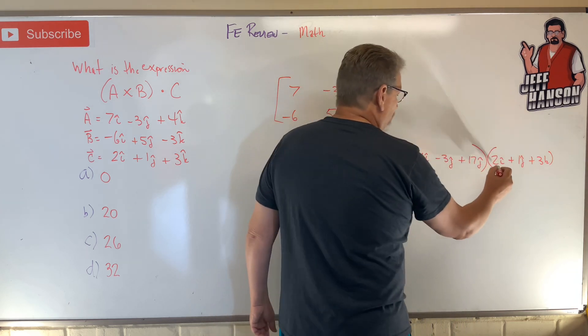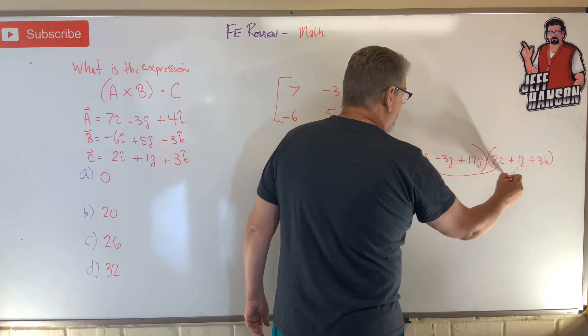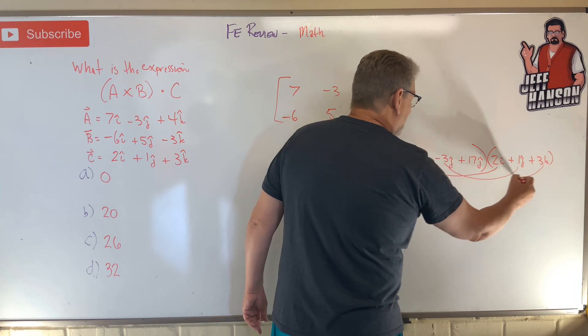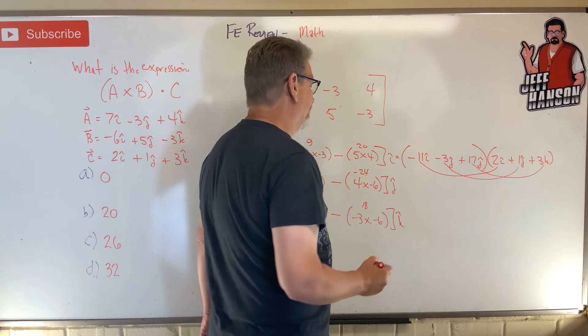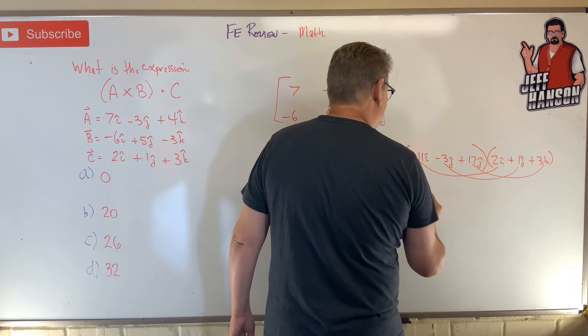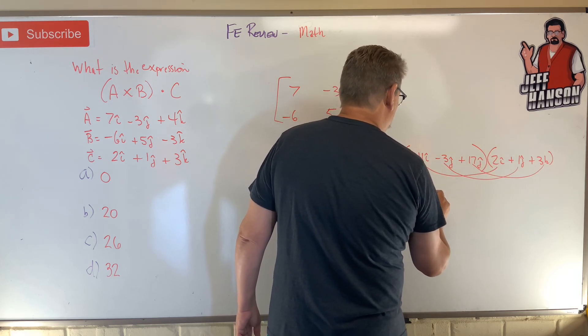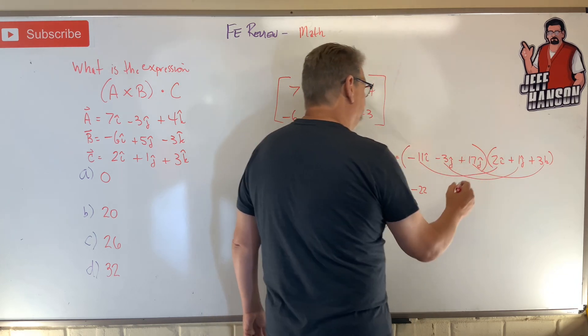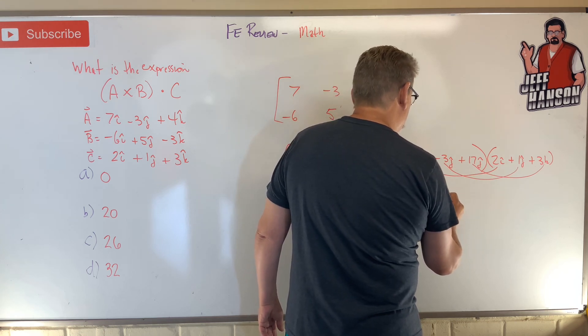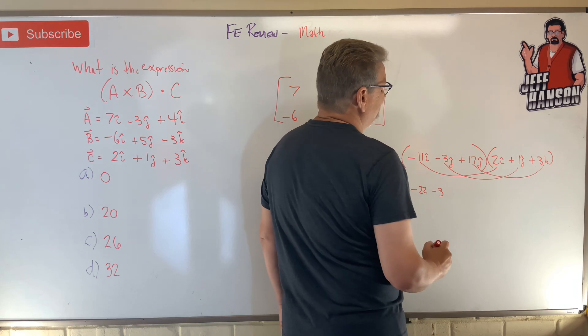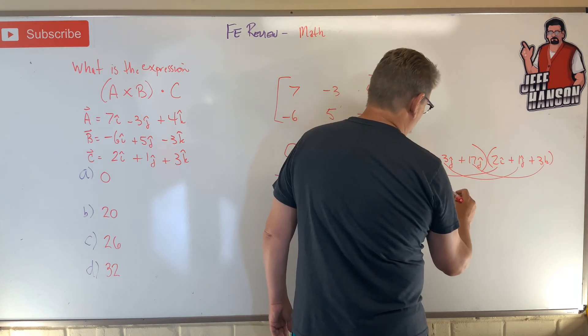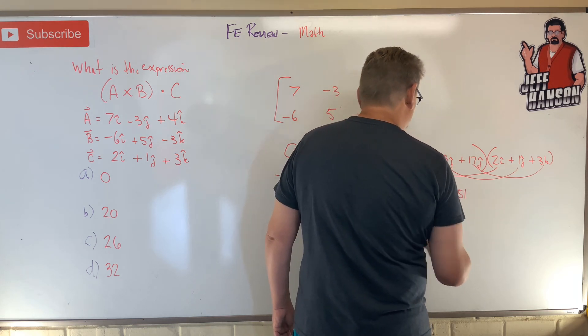So what do we do? We multiply the i's together. We multiply the j's together. We multiply the k's together. That's how you do dot product. And then you add those things up. So 2 times 11 minus 22. 3 times 1 is negative 3. Negative, negative. And then positive 3 times 17 is what? 51.